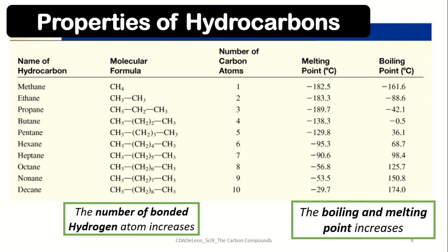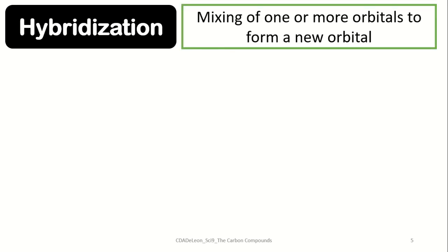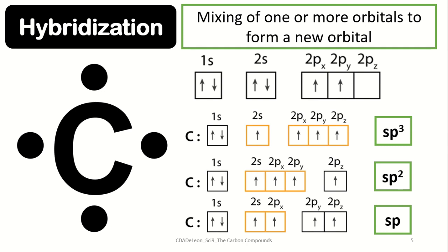Before we study the different types of carbon compounds, let us first explore how organic compounds form. This is possible through the process of hybridization, which refers to the idea in which one or more orbitals within the atom combine together to form a new orbital. In the case of carbon, it has four valence electrons distributed within the s and p sub levels. The carbon atom can undergo three types of hybridization: sp3, sp2, and sp hybridization.